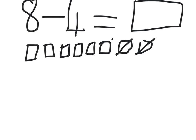So crossing out: 1, 2, 3, 4. Now I need to count how many are left: 1, 2, 3, 4. So my answer is 4.